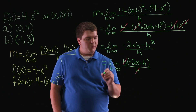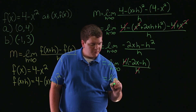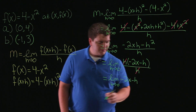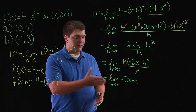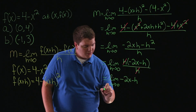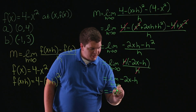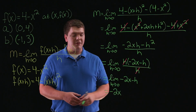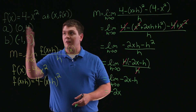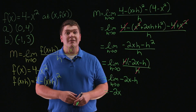We're left with our slope being equal to the limit as h approaches 0 of negative 2x minus h. Taking the limit as h approaches 0, substituting 0 in for h, we have negative 2x minus 0, which is negative 2x. So this is the slope of the graph of the function 4 minus x squared at an arbitrary point x, f of x.